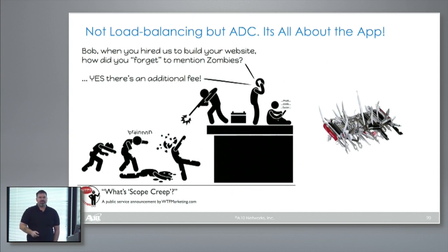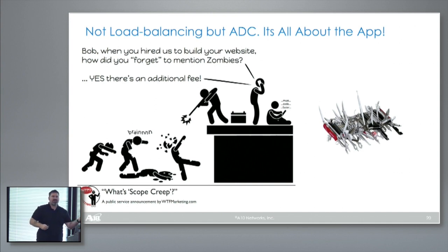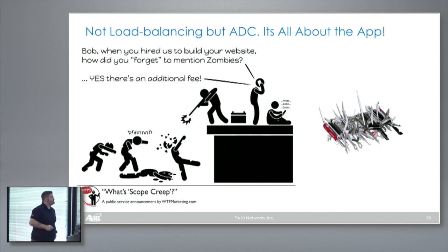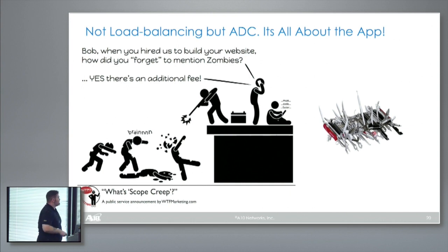ADC is a control point in the infrastructure — something centralized where you're extending the application onto infrastructure services. WAF is not load balancing. Authentication offload is not load balancing. I pulled this off the internet — so thanks for putting this out there and I put it in a presentation.